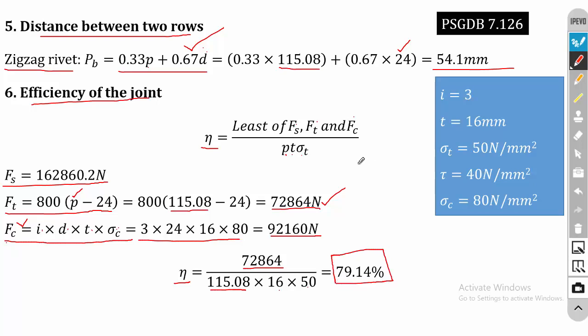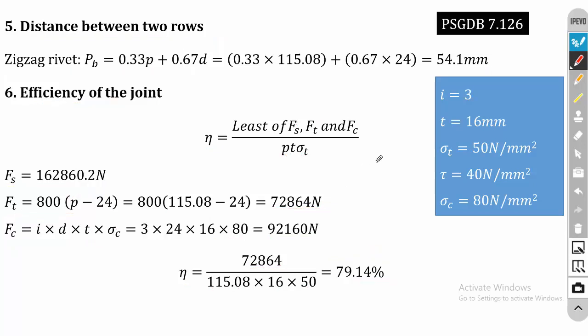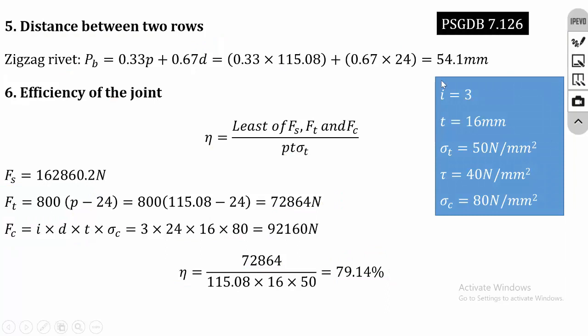The procedure is the same as for the lap joint, except for the first step: in a lap joint we do not calculate cover plate thickness, but for a butt joint we must calculate the thickness of the cover plates first. The remaining procedure is similar.